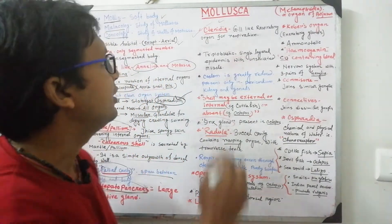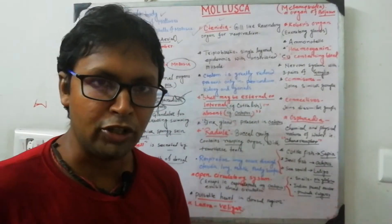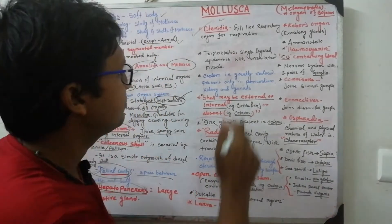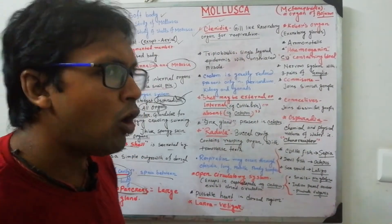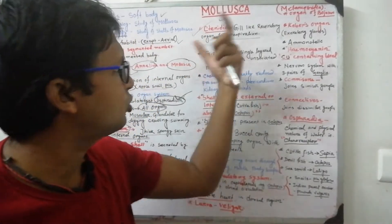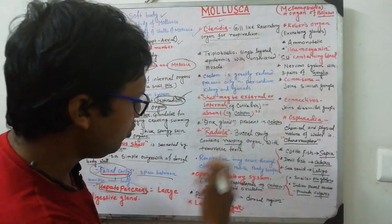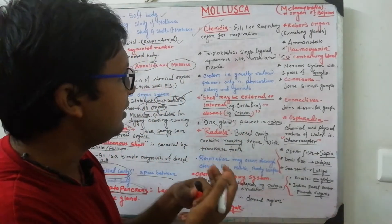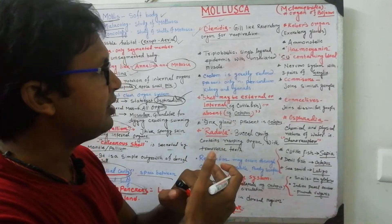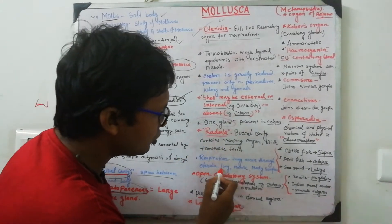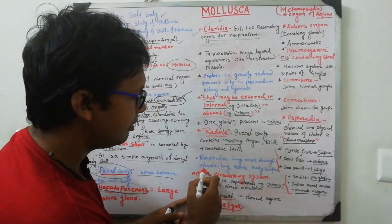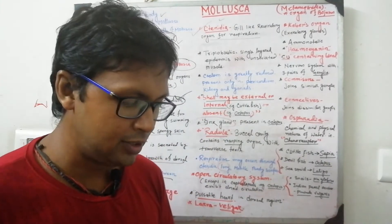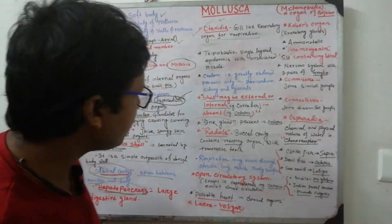Another important trait is the ctenidia (also called tenidia), a gill-like respiratory organ responsible for respiration. However, respiration in molluscs does not occur through ctenidia alone — it also occurs through other organs including the mantle, body surface, and lungs. These are all different respiratory organs.